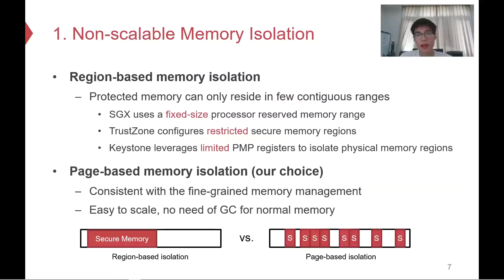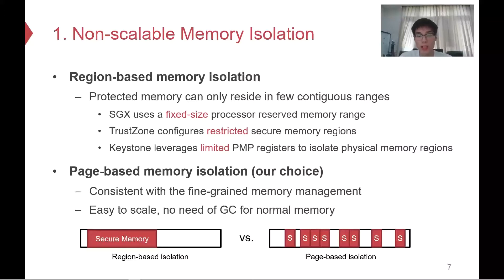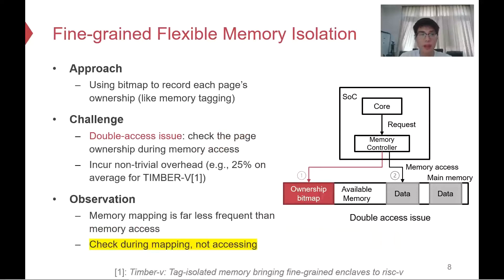First, let's talk about non-scalable memory isolation. Prior art usually uses region-based memory isolation — it configures several contiguous physical memory regions as secure memory, and these regions are isolated from normal memory. Such static or almost-static memory isolation mechanisms are hard to scale. Page-based isolation is more scalable, as it is consistent with fine-grained memory management and can allocate protected memory on demand. Several systems realize fine-grained memory isolation using a bitmap to record each page's ownership, like tagged memory. However, this approach introduces a double-access issue: before accessing real data, it needs another memory access for page ownership.